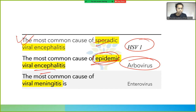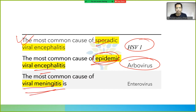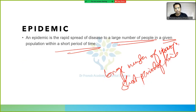Arbovirus is covered in separate YouTube videos. Most common cause of viral meningitis is enterovirus. In India, Japanese encephalitis virus — an arbovirus — is one of the most common causes of encephalitis outbreaks.